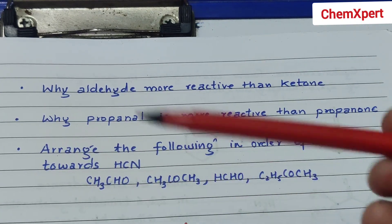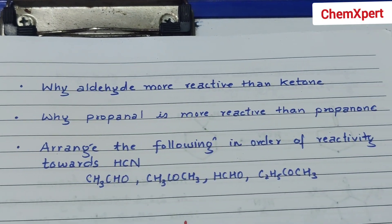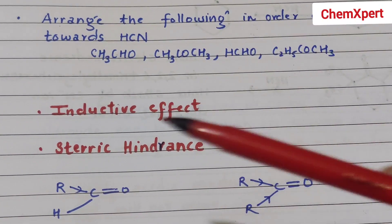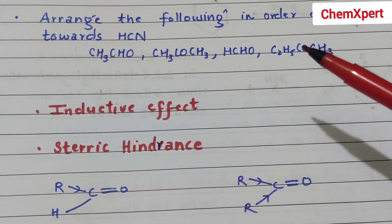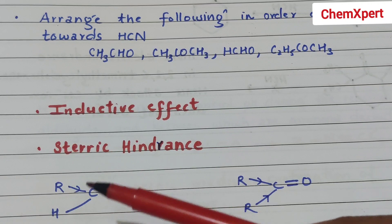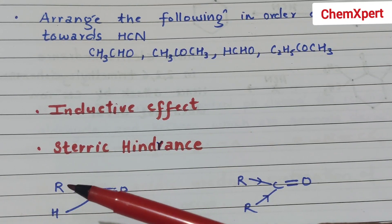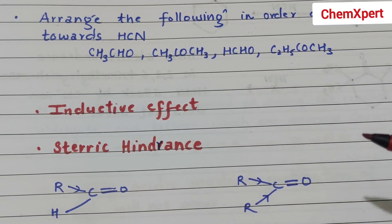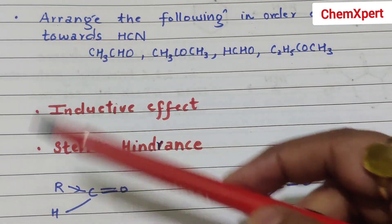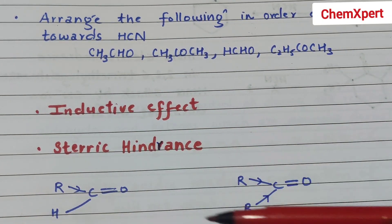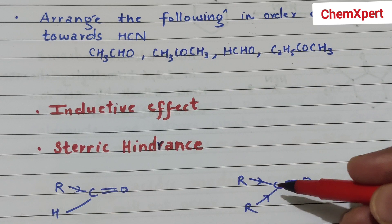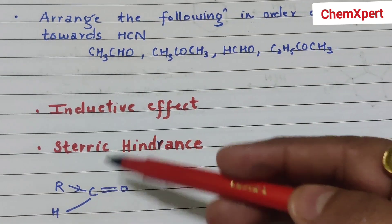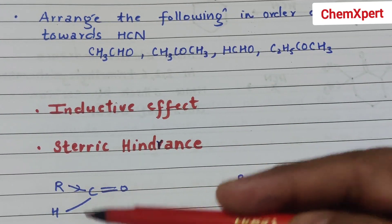The basic answer is that aldehyde is more reactive than ketone. The two key factors are inductive effect and steric hindrance. Greater the inductive effect, lesser will be the reactivity. In aldehyde there is less inductive effect because only one alkyl group is present, whereas in ketone there are two alkyl groups, so greater the +I effect, hence less will be the reactivity. In ketone the carbonyl carbon is more sterically hindered, whereas in aldehyde it is less sterically hindered, hence aldehyde is more reactive.